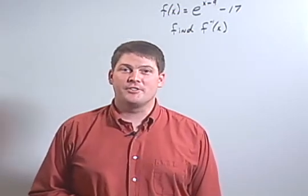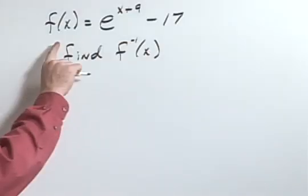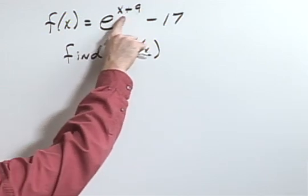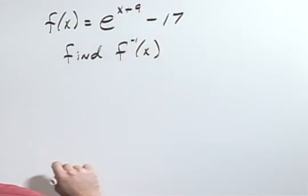Given a function, find its inverse. f of x equals e to the x plus 9 minus 17.